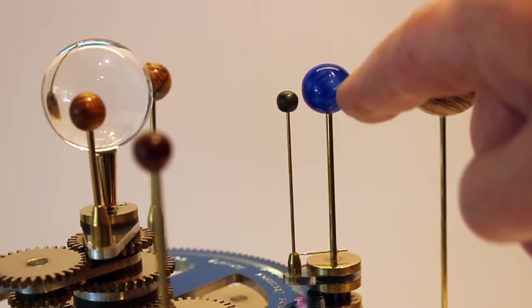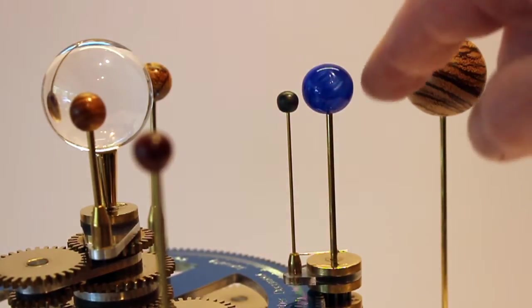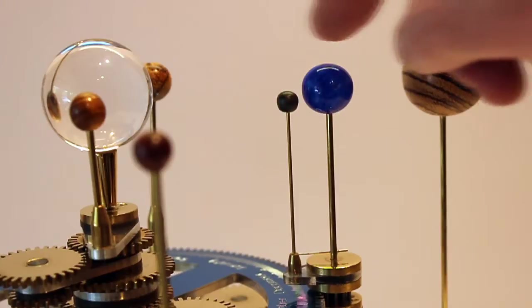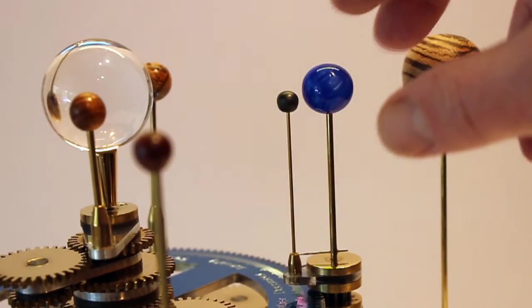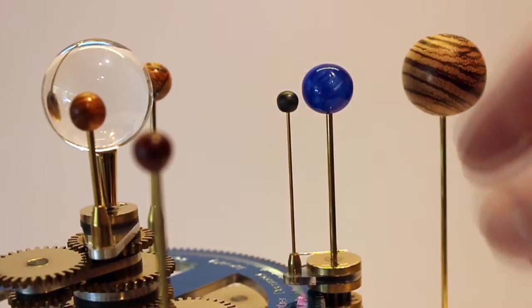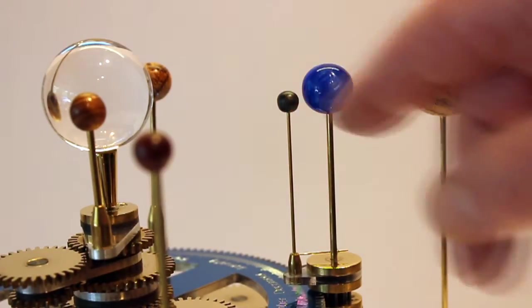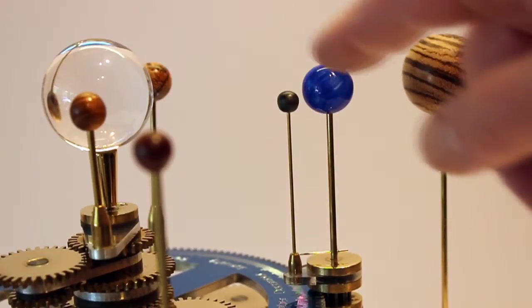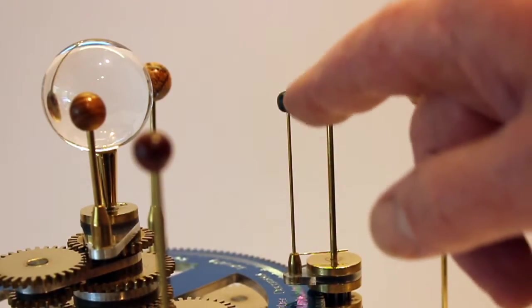I made the earth from an acrylic pen blank and I chose a blue with white to give the effect of a cloud cover over the earth as it often looks from space. The moon was made from ebony and I added a little gray streaking to it because the ebony is jet black.